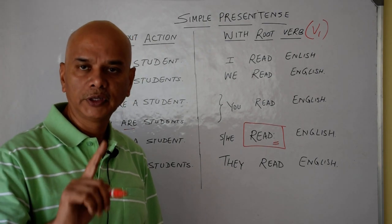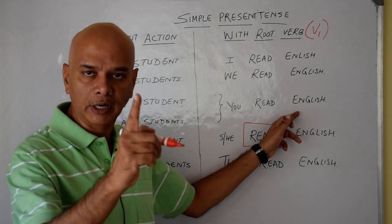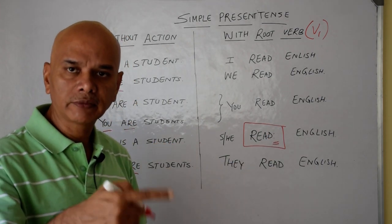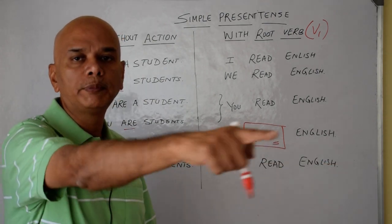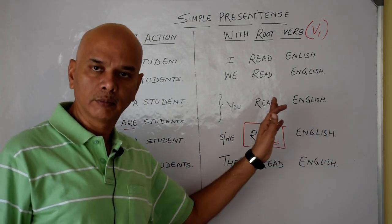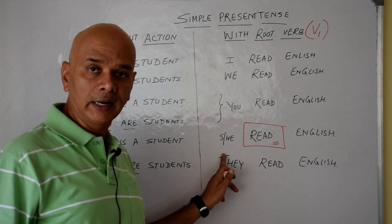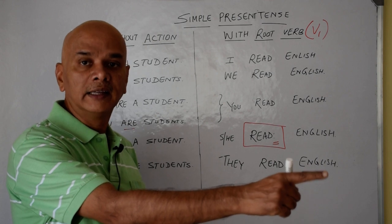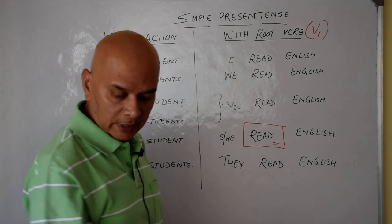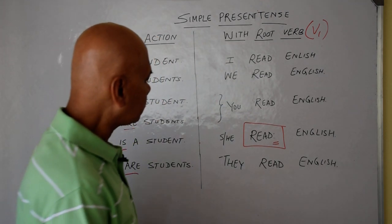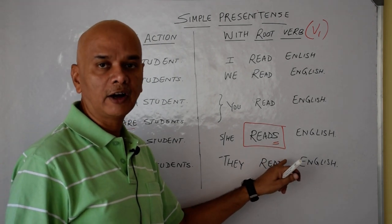Second person singular and plural both use the same form: you read English — whether for one person or many people. Third person — be careful: he reads English. With third person singular, the verb takes an 's' or 'es'.